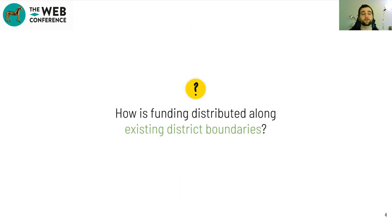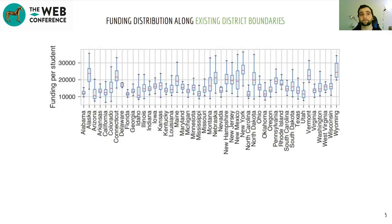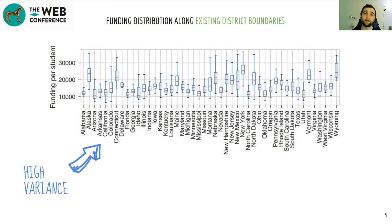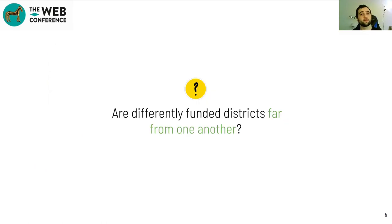Since redefining districts could potentially control for local property taxes, we need to understand how funding is currently distributed along district boundaries. Looking at every district across the U.S., we observe high variance in their funding distributions. In some states, funding more than doubles between the least and most funded districts. The second question is whether differently funded districts are far from one another geographically.